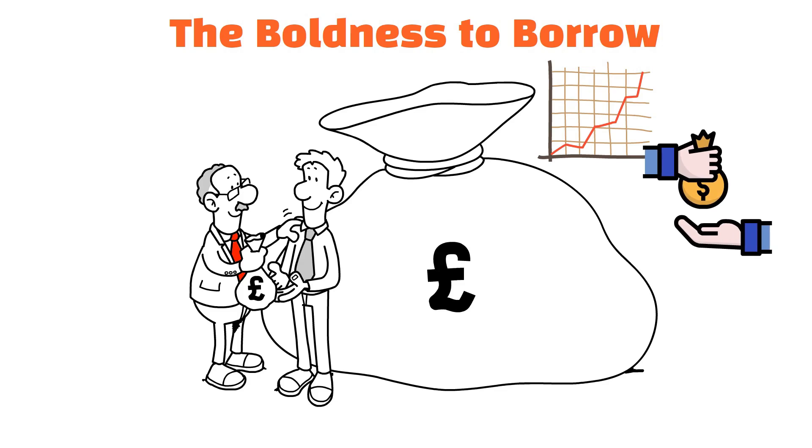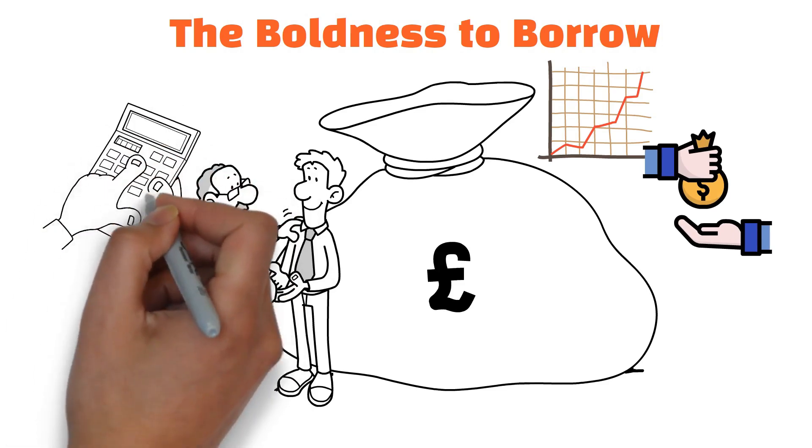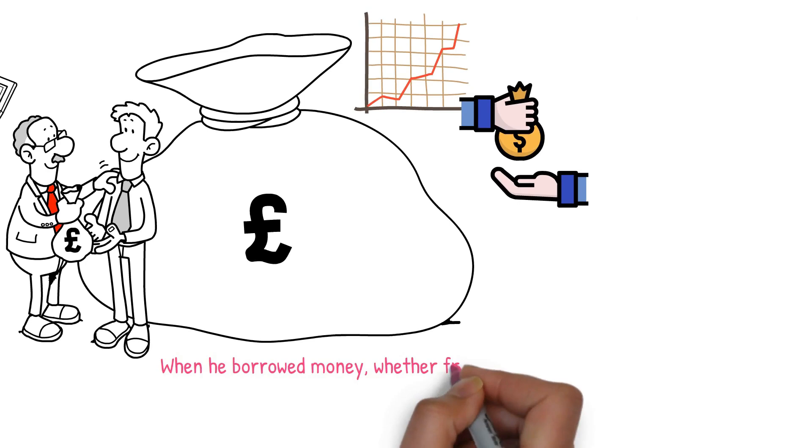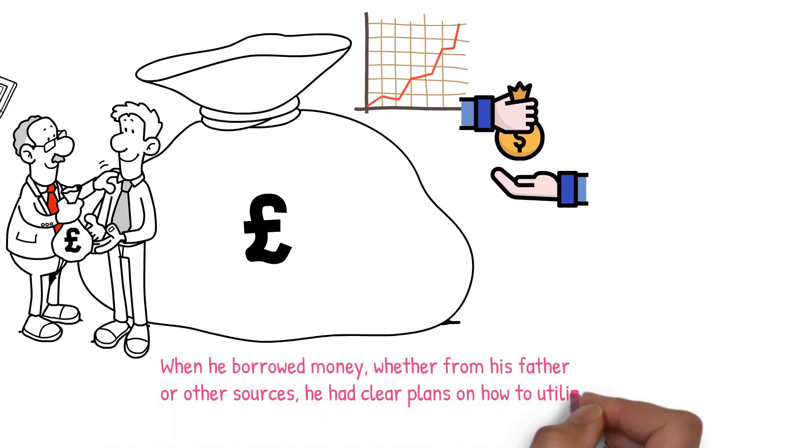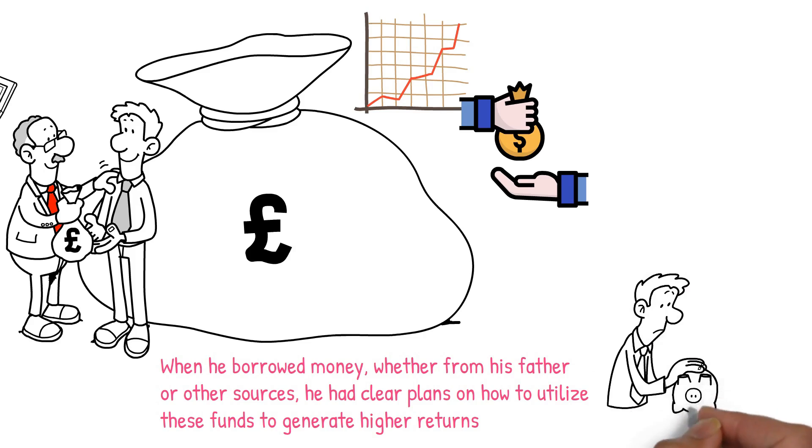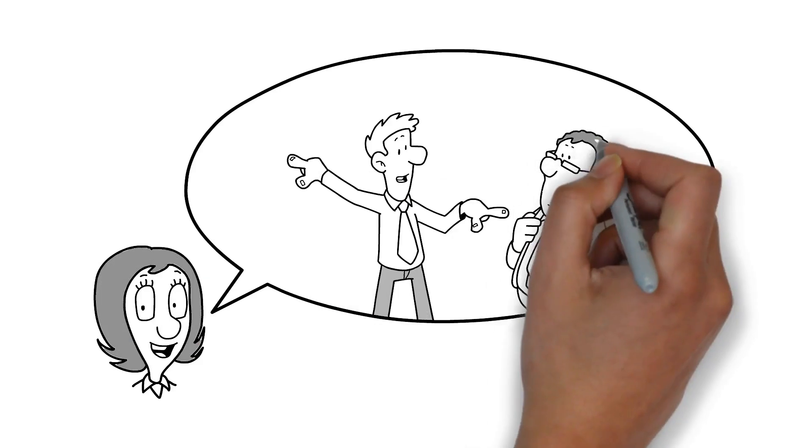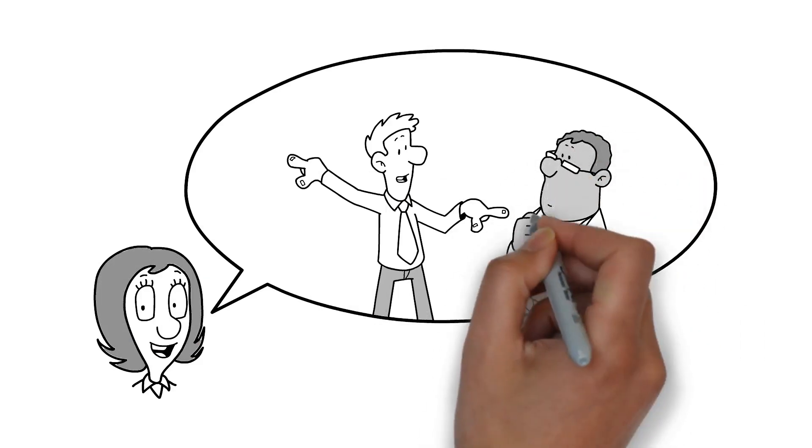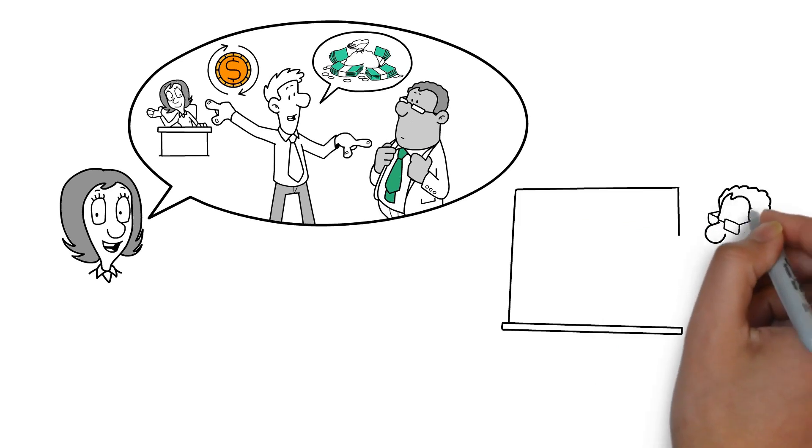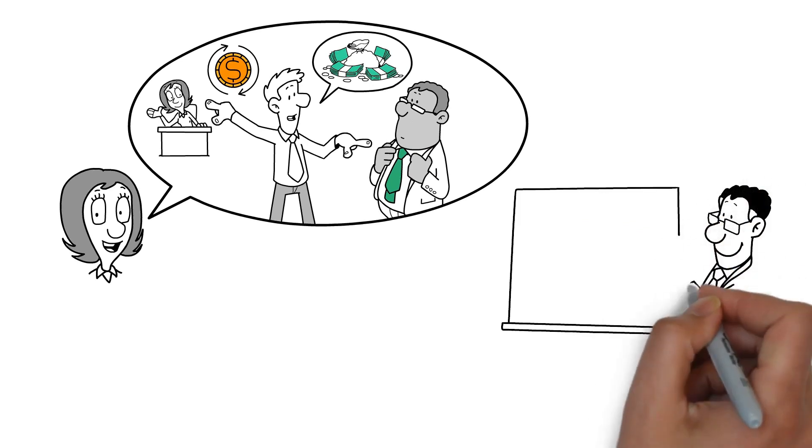Rockefeller didn't borrow indiscriminately. He did so with calculated foresight. When he borrowed money, whether from his father or other sources, he had clear plans on how to utilize these funds to generate higher returns. This approach allowed him to undertake larger projects and investments that would have been impossible with his own capital alone. Moreover, Rockefeller's approach to borrowing was balanced with a strong commitment to repaying debts. He didn't just borrow wisely; he also ensured he had a plan for repayment. This responsible borrowing not only helped him to sustain and grow his business ventures but also built his reputation as a reliable and trustworthy businessman.